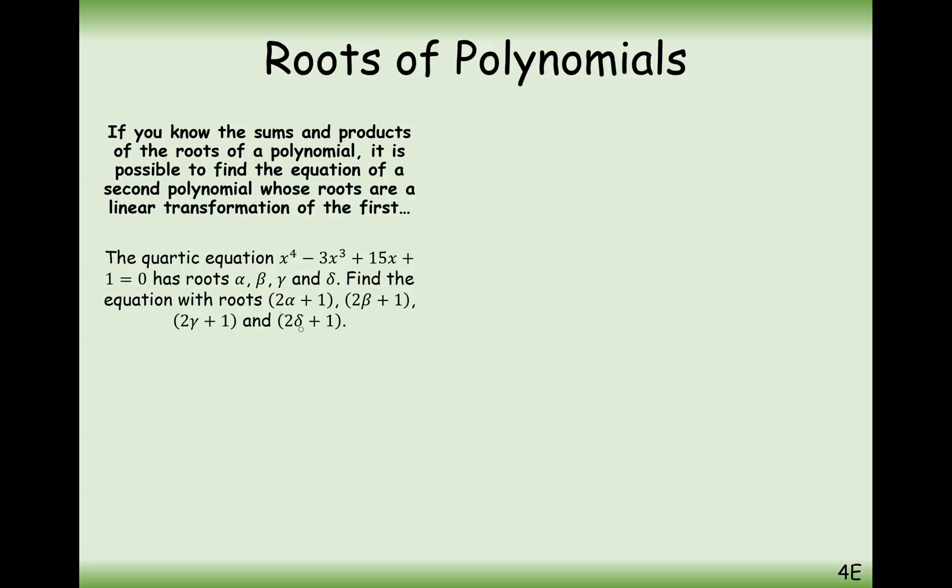Now the final question here is going to involve two transformations. We can see here we have as difficult a question as it can be. We have a quartic equation with roots alpha, beta, gamma, delta. And we need to find the equation with roots 2 alpha plus 1, 2 beta plus 1, 2 gamma plus 1, and 2 delta plus 1. So it's only ever going to be a multiply or add type transformation. It's not going to be a square type transformation.